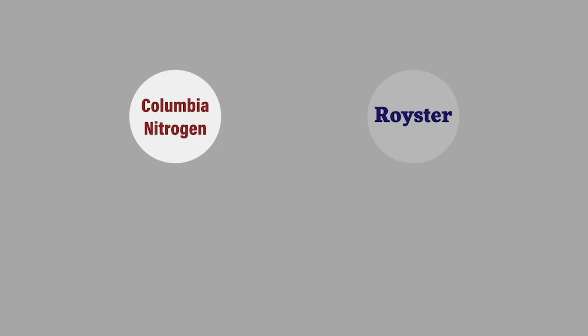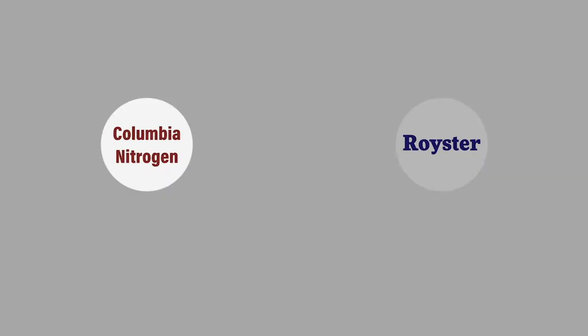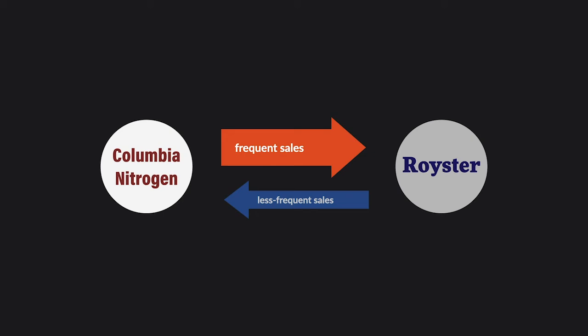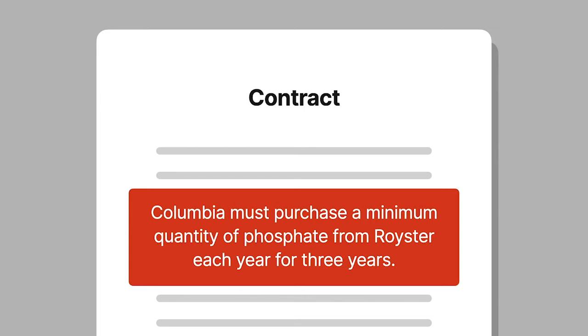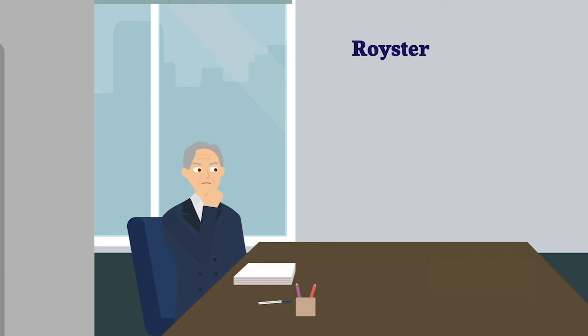Columbia produced nitrogen and fertilizer, while Royster manufactured and marketed fertilizer. For many years, Royster had consistently purchased Columbia's products, while Columbia was a less frequent customer of Royster. After Royster built a facility that would produce substantially more phosphate than it needed for its own use, Royster looked to sell the excess to Columbia. Royster and Columbia signed a contract requiring Columbia to purchase a minimum quantity of phosphate from Royster each year for three years, specifying the price per ton with an escalation clause dependent on production costs.